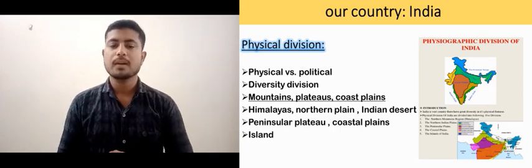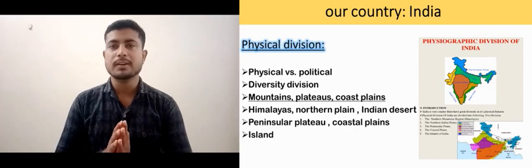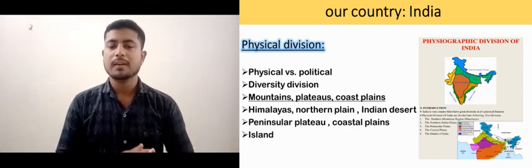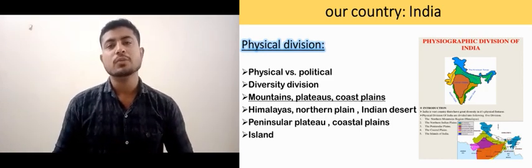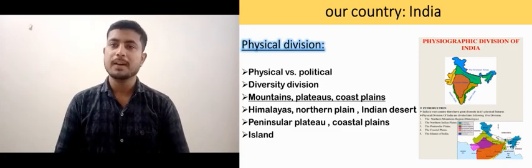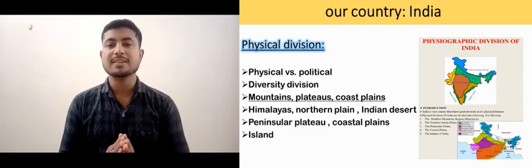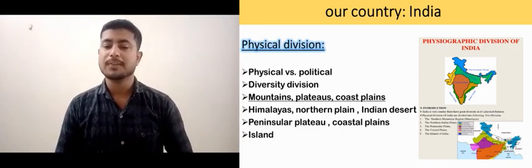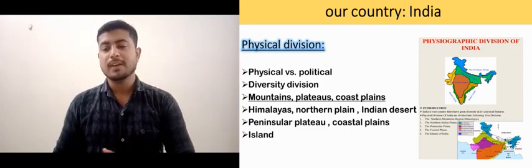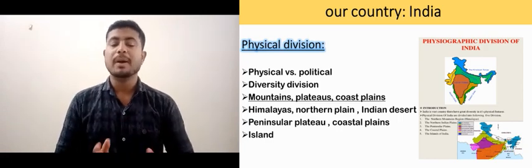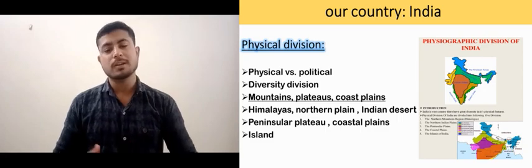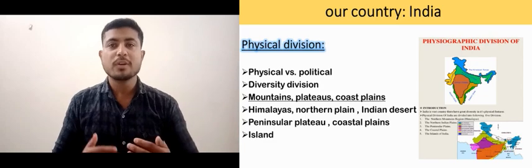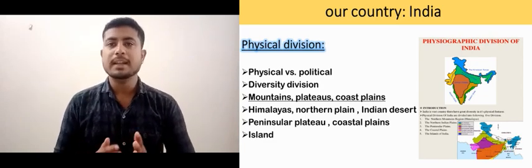You are able to see different land areas in different states, like mountain ranges, plateaus, and coastal plains — that's how India is divided by nature. There are the Himalayas, the Northern Plains, the Indian Desert, the Peninsular Plateau, and the Coastal Plains and Islands in India. We are going to discuss all of them in detail in the next video.